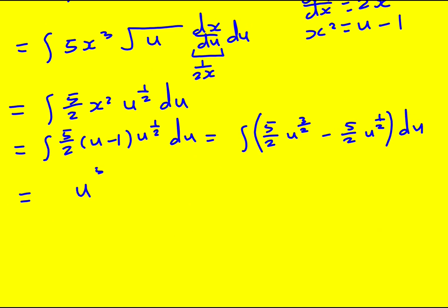So I'm going to increase the power by 1 and divide by that new power, it's going to be 2 over 5. So actually they're going to cancel, I'm just left with u to the 5 over 2. And over here, increase the power by 1 and times 5 over 2 by 2 thirds. The 2s cancel.